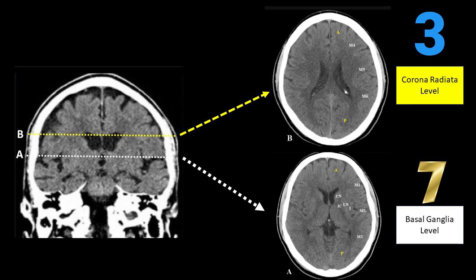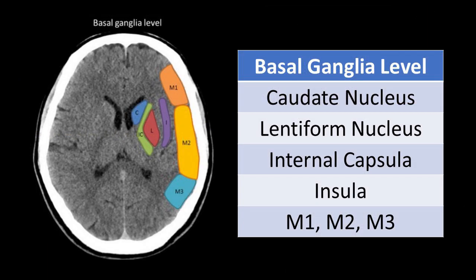At the height of the basal ganglia, there are seven points of the ASPECTS score: caudate nucleus, lentiform nucleus, internal capsule, and insula cortex. Then, M1 territory is the anterior middle cerebral artery cortex corresponding to the frontal operculum. M2 territory is the cortex of the middle cerebral artery lateral to the insular ribbon, corresponding to the anterior temporal lobe. M3 territory is the posterior middle cerebral artery cortex, corresponding to the posterior temporal lobe.